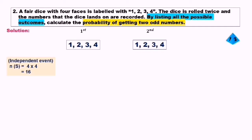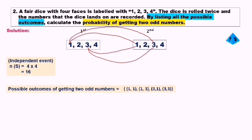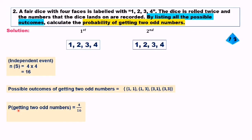The possible outcomes for the dice rolled the first time are 1, 2, 3, 4, and for the second roll also 1, 2, 3, 4. The pairs giving two odd numbers are: (1,1), (1,3), (3,1), and (3,3) — so we have 4 possible outcomes. The probability of getting 2 odd numbers equals 4 over 16, which simplifies to 1 over 4.